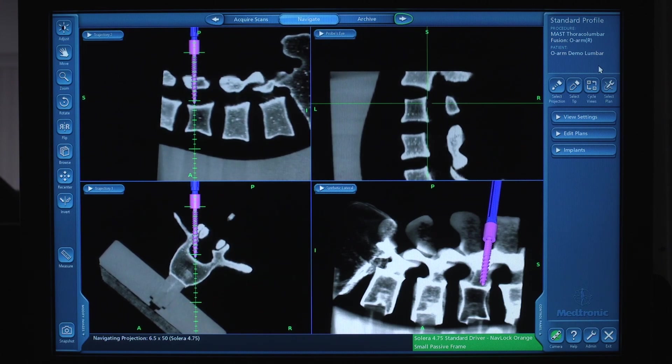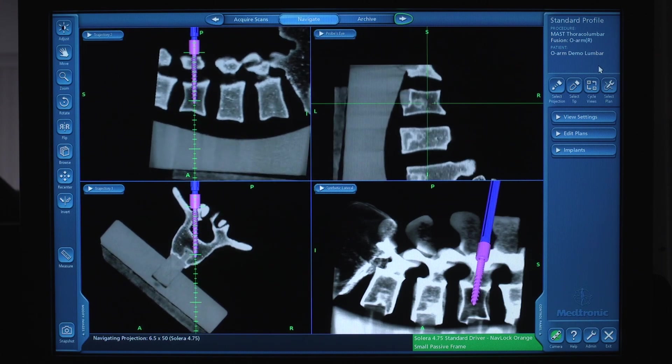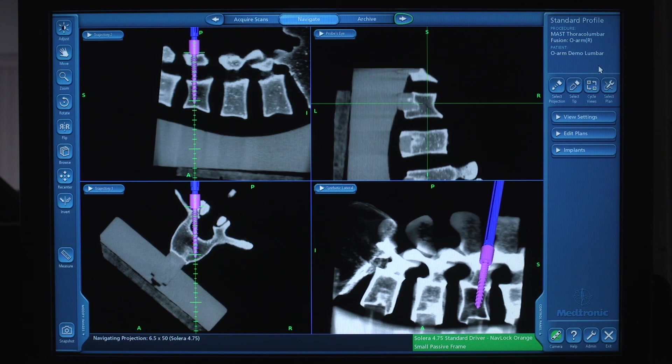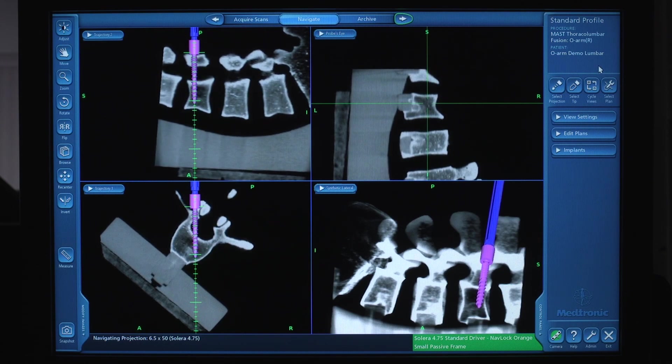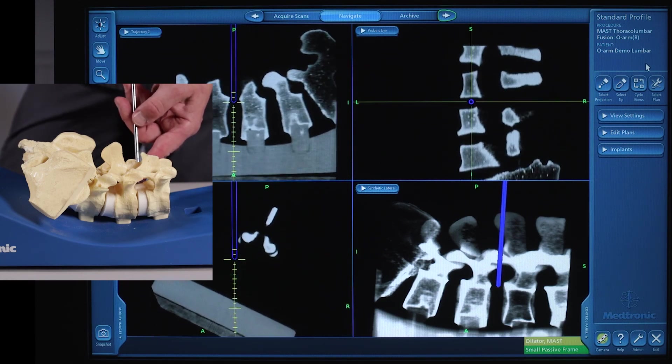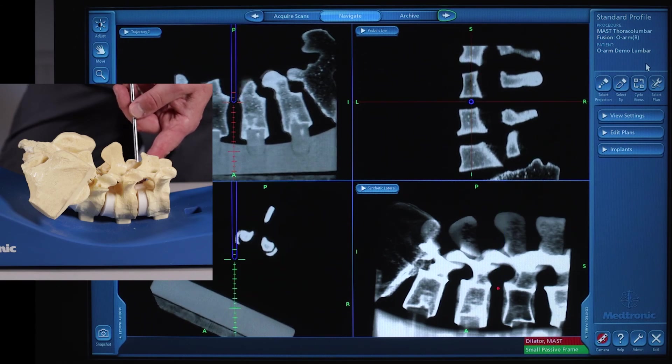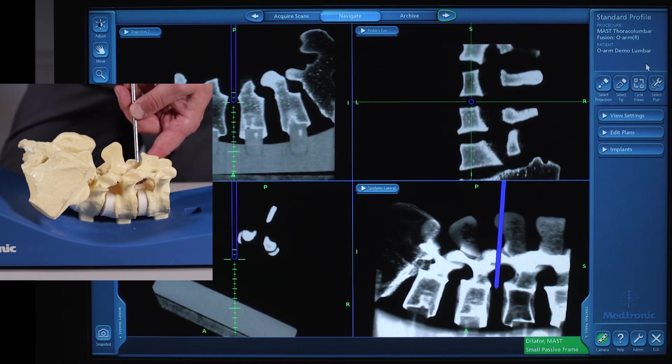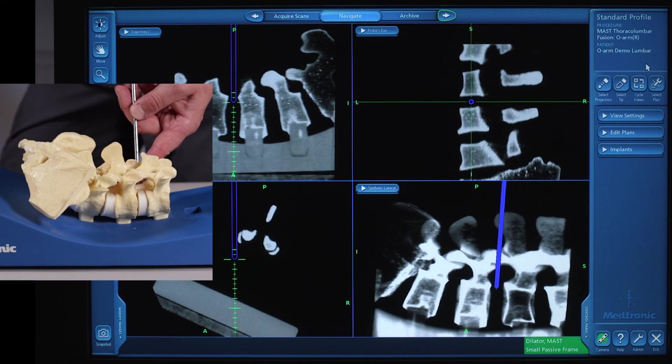From this point, the surgeon can implant his screw in the desired trajectory and move to the next level. To do the inner body prep work, we can use the mass dilator, for instance. Once the surgeon finds the trajectory, he can then introduce the correct size dilators to perform the discectomy.